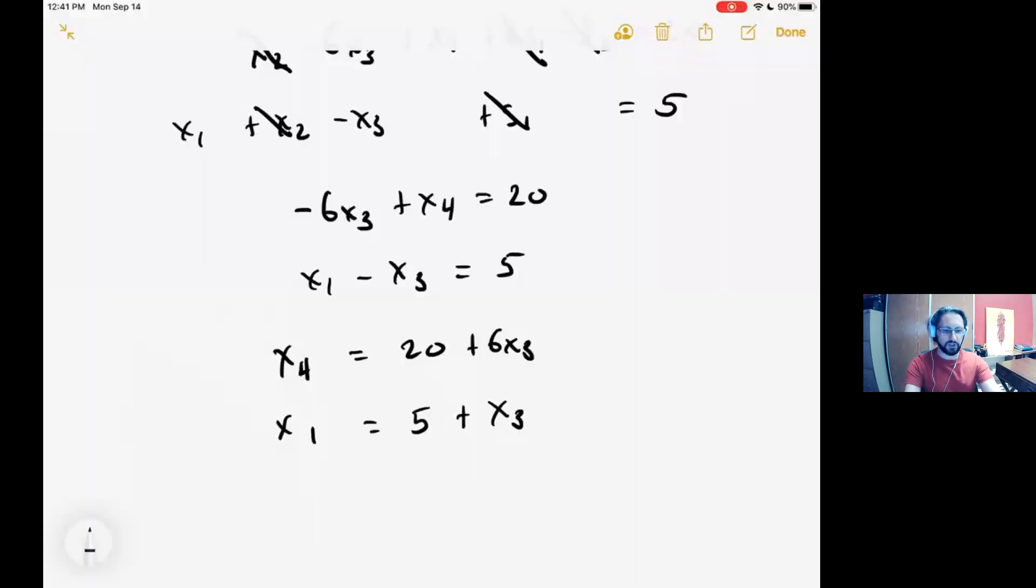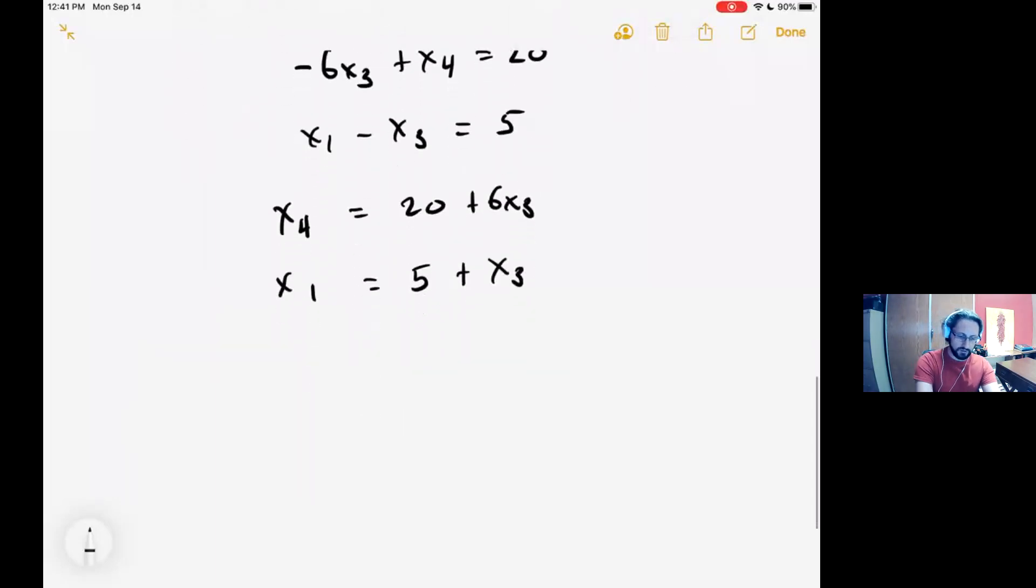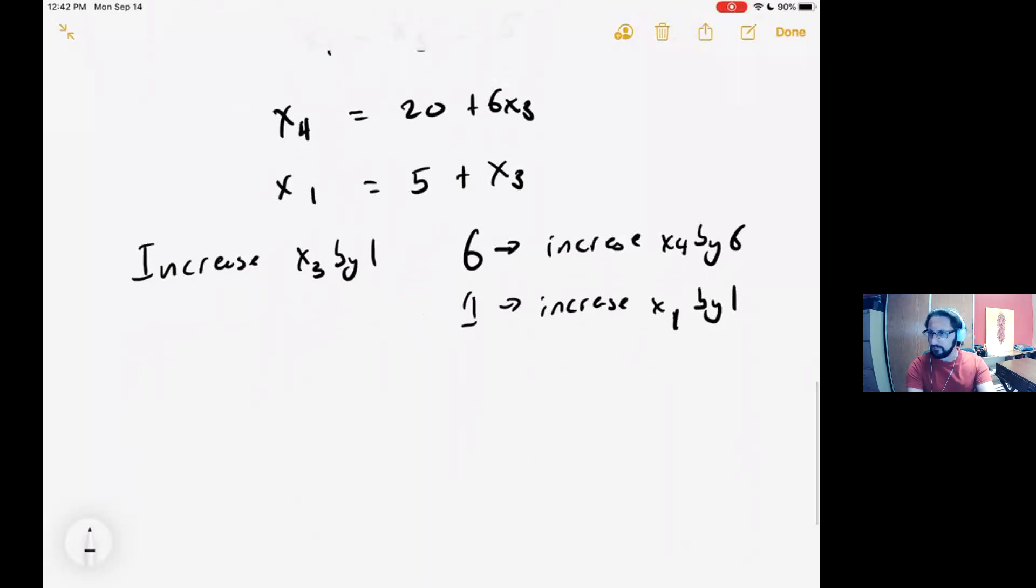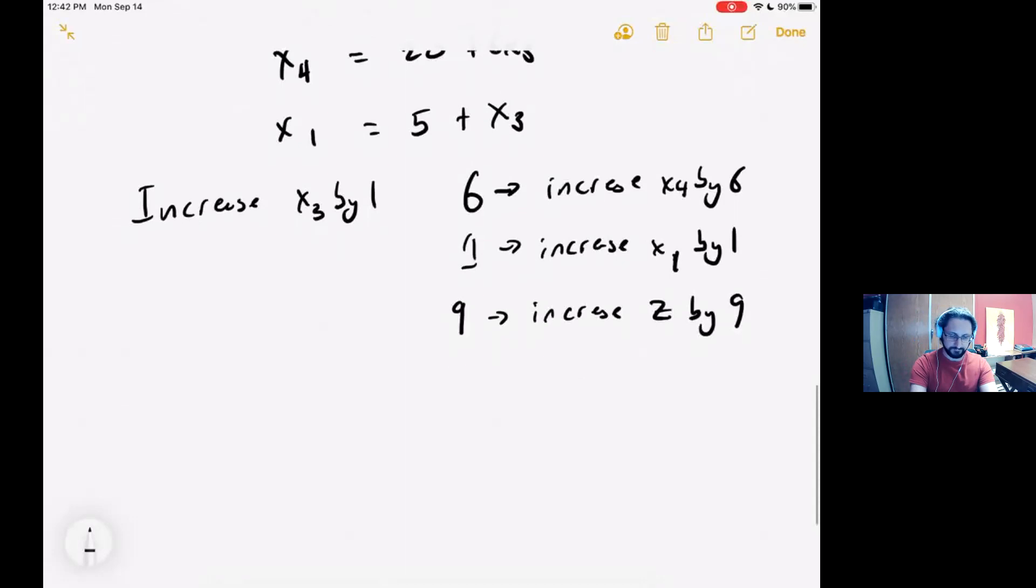What do these two equations say about the constraint situation? Consider these as slopes. If I increase x3 by 1, the slope of 6 says I should increase x4 by 6. The slope of 1 in the second constraint says I should increase x1 by 1. And finally, if I include the slope of the constraint of the objective function, I believe that slope was 9. This increases z by 9. All of the other variables aren't affected by x3.